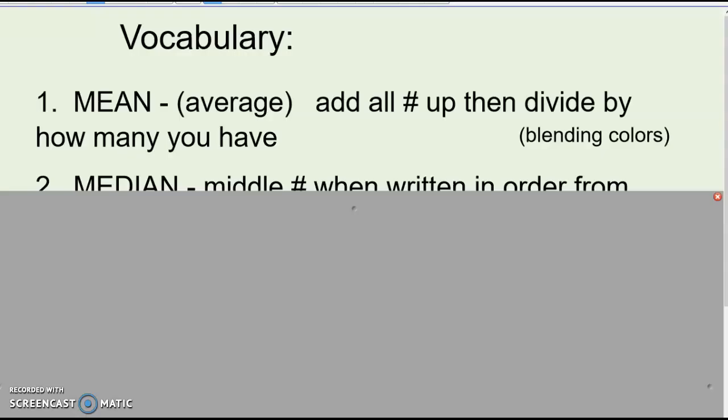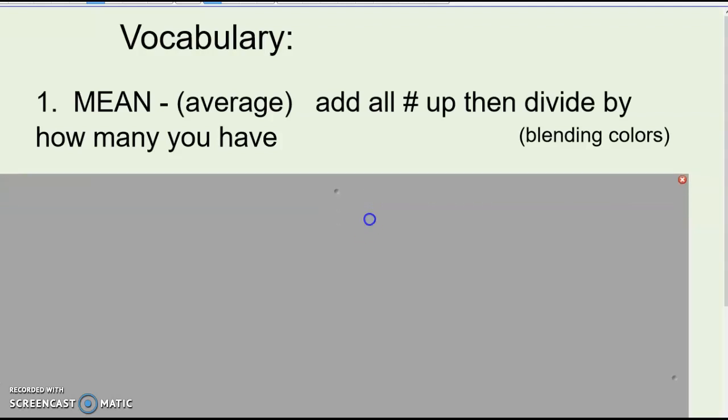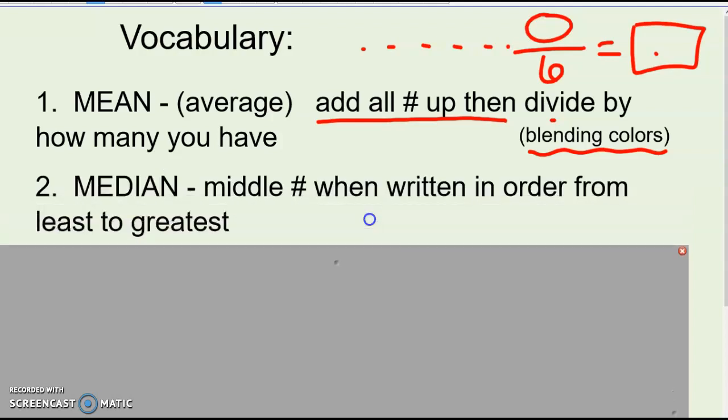Moving on to vocabulary. First one is the mean or the average. Please write down the first one is the mean or the average. To find that, we add up all the numbers in our list and then take that answer and divide by how many numbers we have. So if you have six numbers in your list, you'd add those six numbers up and get a total, and then divide it by six. That answer is your mean or your average. I like to think of the mean as like putting everything in a blender, blending it up, and then seeing what you would get once it's all mixed together.